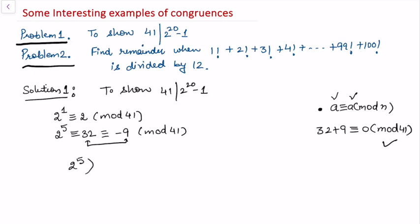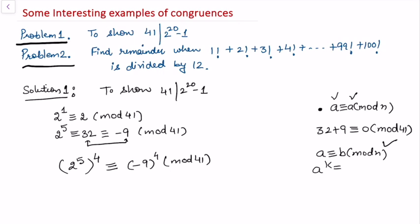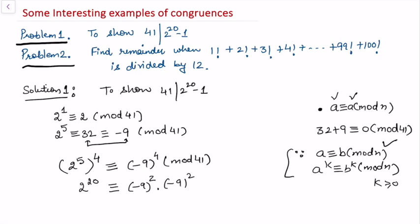Since we have 2 to the power 5, we can raise both sides to the power 4: (2⁵)⁴ ≡ (-9)⁴ (mod 41). We are using the property that if a ≡ b (mod n), then aᵏ ≡ bᵏ (mod n) for non-negative integer k. This gives us 2 to the power 20 ≡ (-9)⁴, which we can write as (-9²) times (-9²) modulo 41.